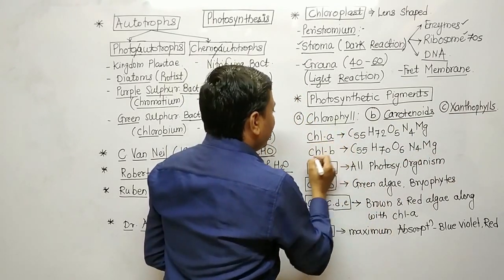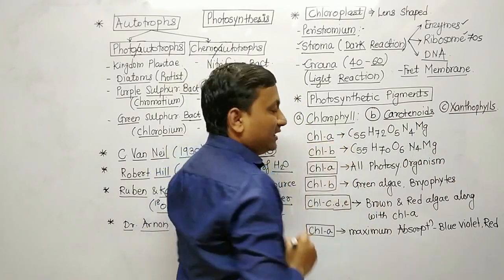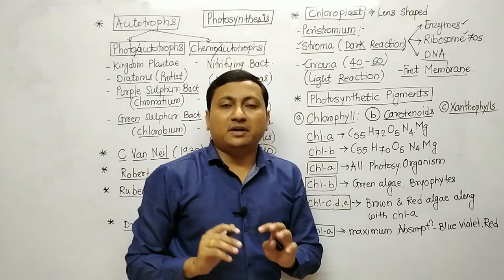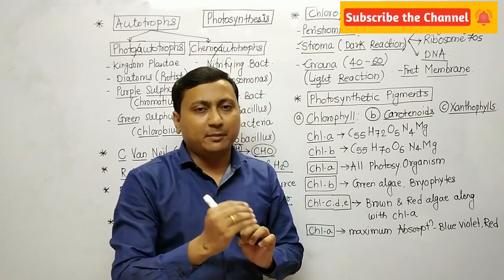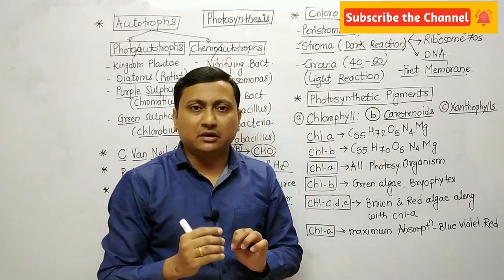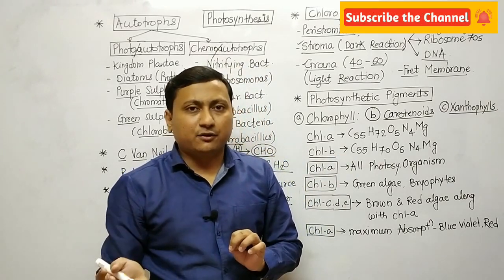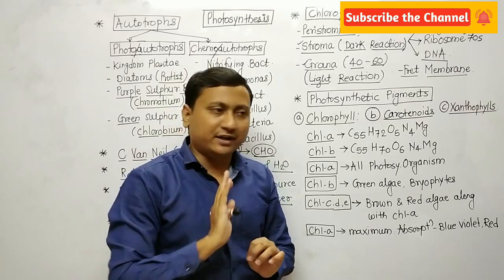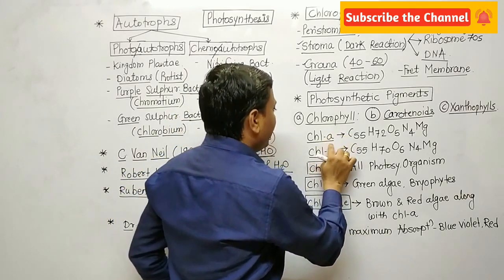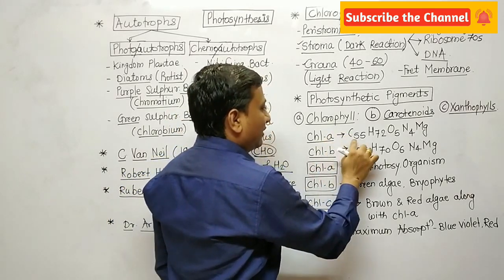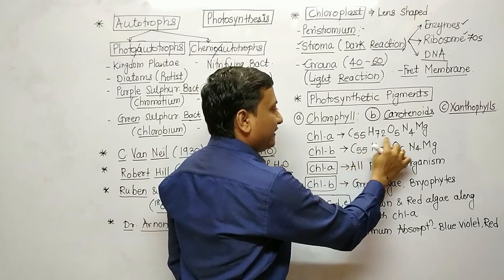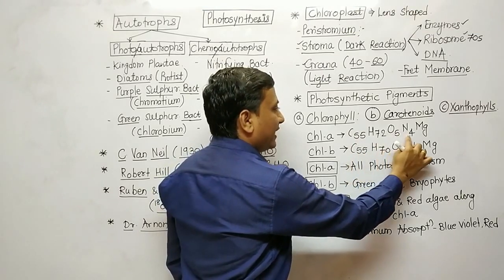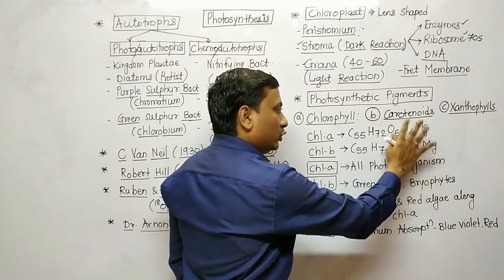In chlorophyll, there are a total of 7 types: chlorophylls A through E, bacteriochlorophyll, and bacteriochlorophyll. Chlorophyll A has the chemical formula C55 H72 O5 N4 Mg. Chlorophyll B has the formula C55 H70 O6 N4 Mg.